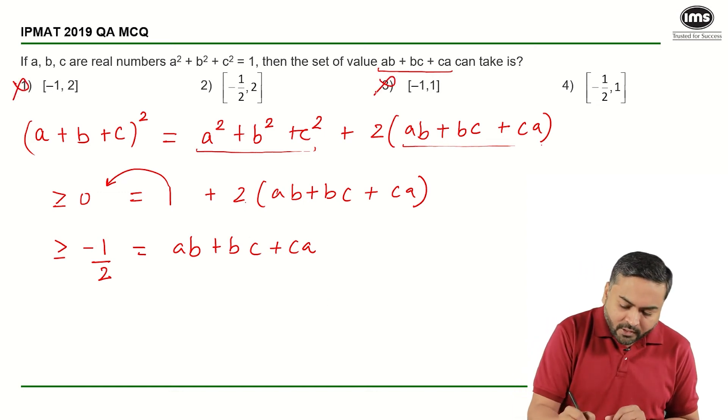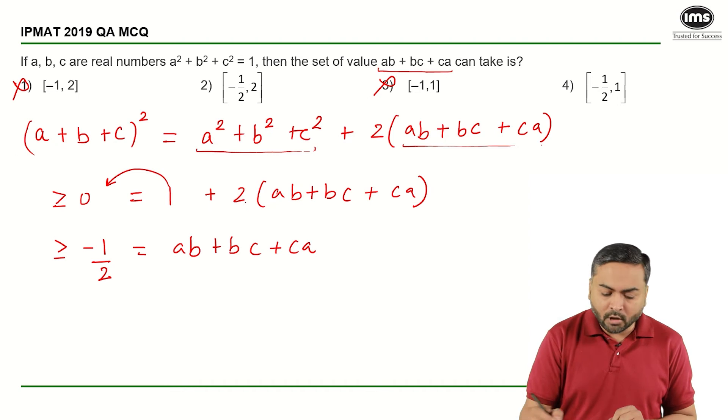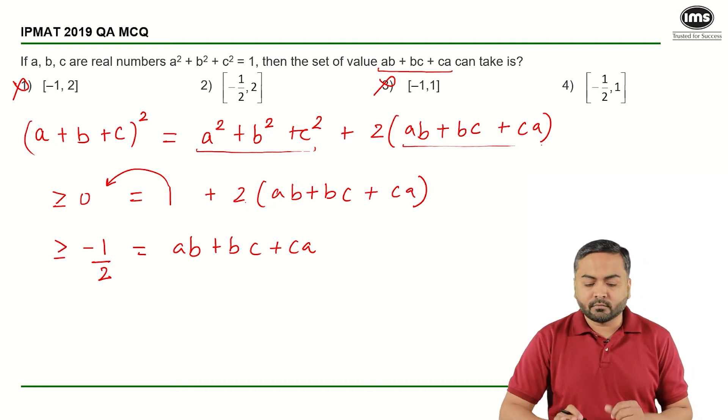So the first option and the third option gets eliminated. Now I have left with either the second option or the fourth option.